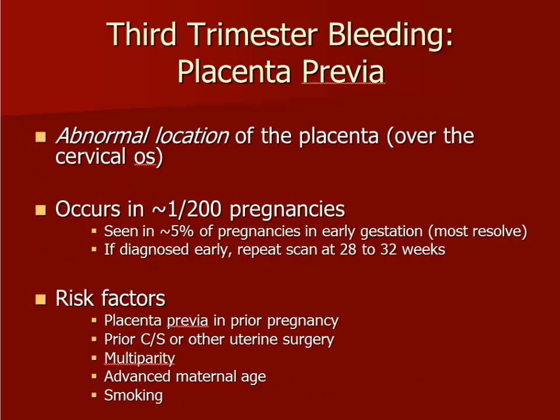One of the most significant causes of third trimester bleeding is placenta previa. Placenta previa is defined as a placenta that is implanted over or near the cervical os, which is an abnormal location. Risk factors for previa are listed below.